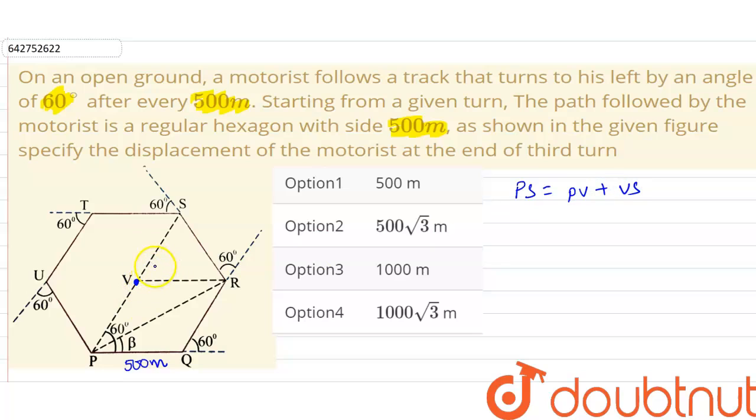And this will be equal to the side of the hexagon. So this distance will be 500 meters. Now the displacement will be given as 500 meters plus 500 meters.